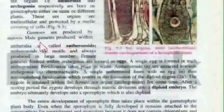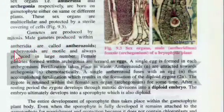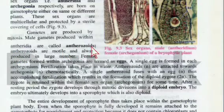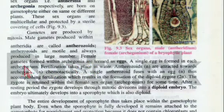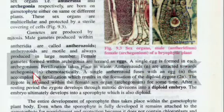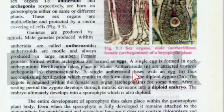Gametes are produced by mitosis. Male gametes produced within antheridia are called antheridozoids. Antheridozoids are motile and always produced in large numbers. Female gametes formed within archegonia are termed eggs. A single egg is formed in each archegonium. Fertilization takes place in water, which is why reproduction in bryophytes is related to water.